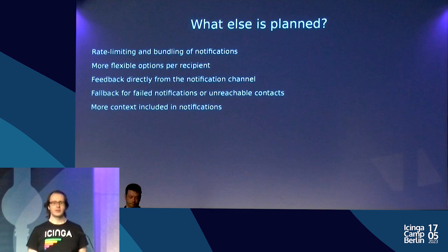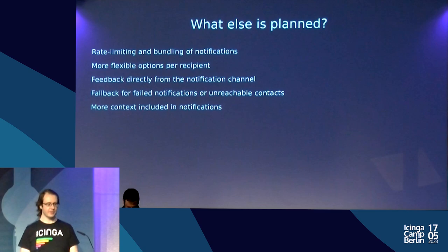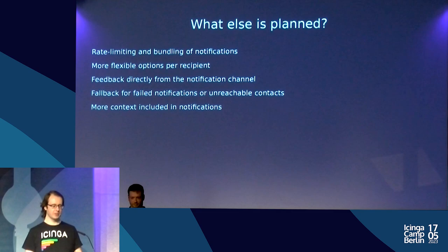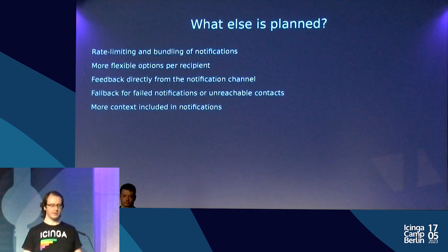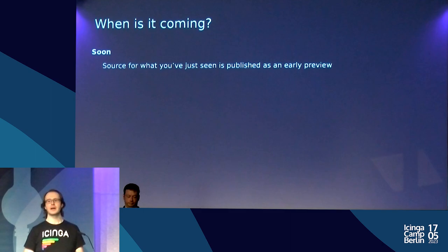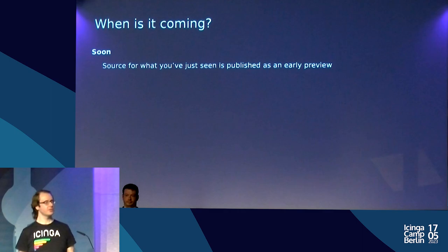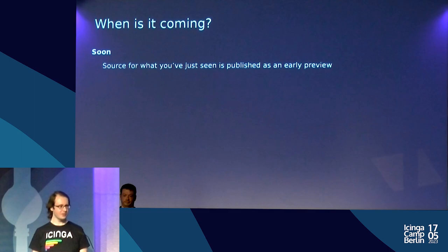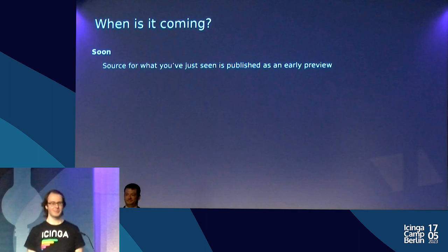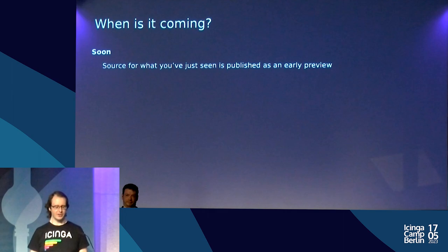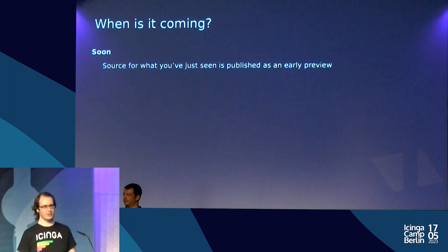With notification scripts in Icinga 2, people have built fancy things like integrating graphs into emails. We'd like to look into fetching additional context for notified objects and integrating that into our notifications. As for timeline: we plan to publish the source for what you've seen soon — we didn't quite make it for the camp, but hopefully by later next week. As I said, this is an early preview — you can look at it and play around, but please don't use it in production.